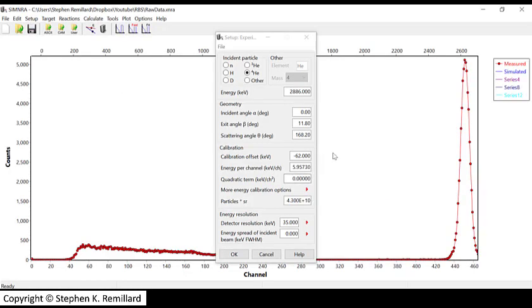The alpha detector needed to be calibrated. We do calibrations with an alpha source. I'll make a separate video showing that. There's an offset and an energy per channel. The energy versus channel number for the alpha detector has a y-intercept at minus 62 keV, and a slope of 5.9573 keV per channel. So those are put here, and they get changed every experiment.